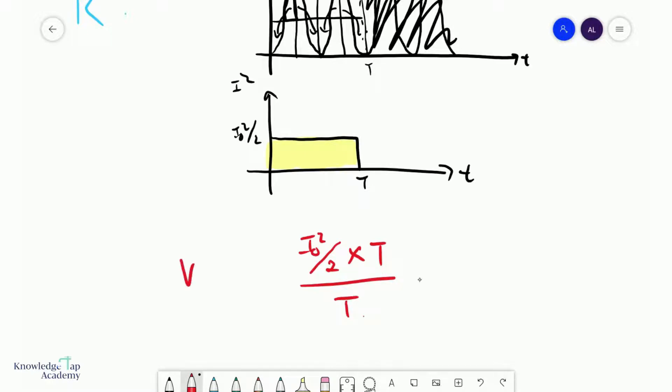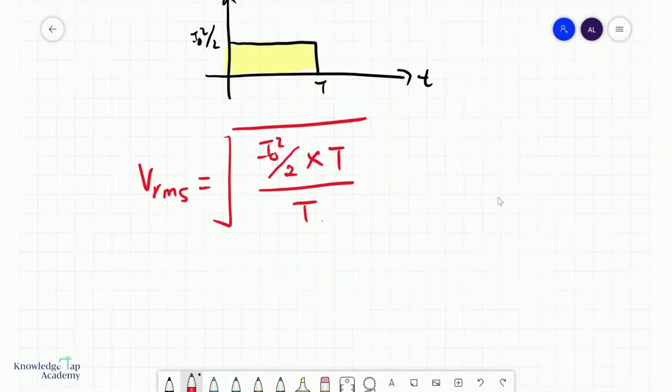And if you want to find the VRMS, the final step is to root the whole thing. And so, what's going to happen now is that these T's will cancel. And so, you will get I0 over square root 2.